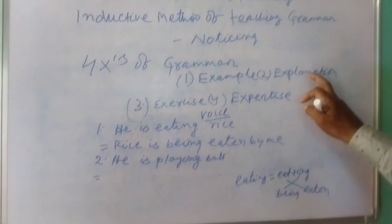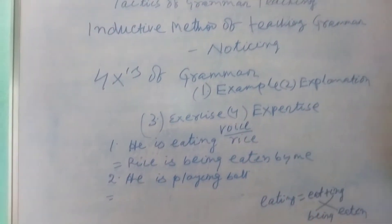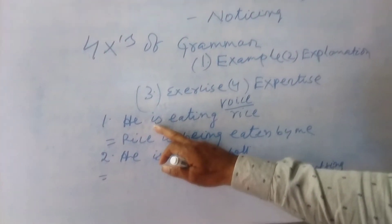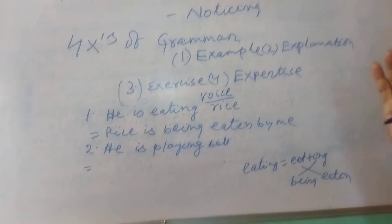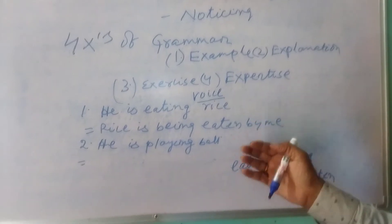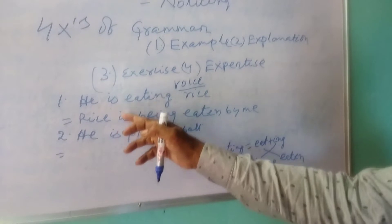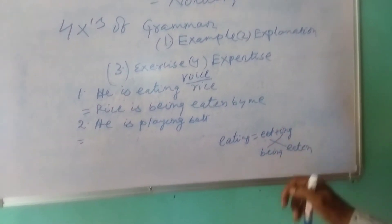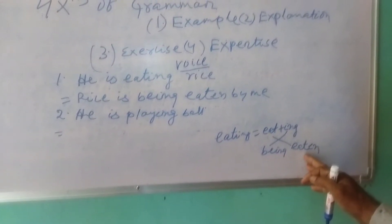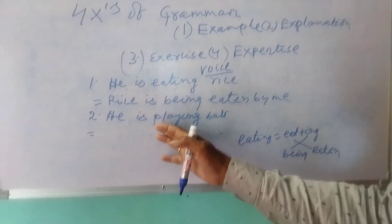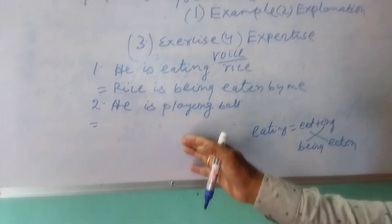Then try to explain — the explanation phase. You tell them: 'He' is the subject, 'rice' is the object, 'eating' is the verb, 'is' is the auxiliary helping verb, 'eating' is the main verb. After the verb, your object always comes. So in passivizing — changing into passive voice — the object 'rice' comes to the front position. Then 'is' comes down, and 'eating' — eat plus ing — always becomes 'being' plus the third form, past participle, that is 'eaten.' So 'ball is being played by him.'